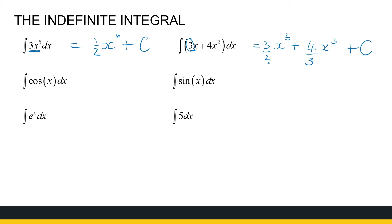So what we're seeing is: if I've got a constant times x to the power n and I want the antiderivative, it'll be x to the power n+1, adding 1 to the exponent, but then dividing by that new number so that when I differentiate it's eliminated, plus c.